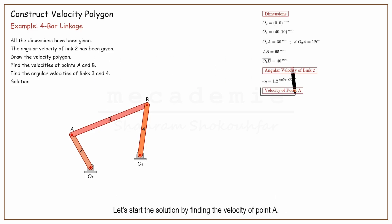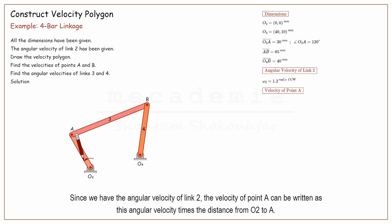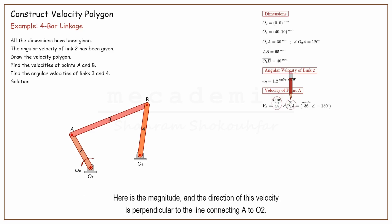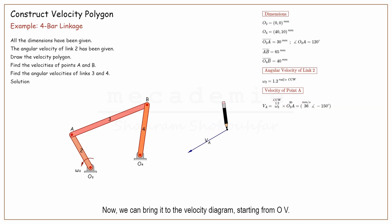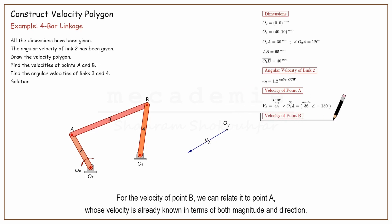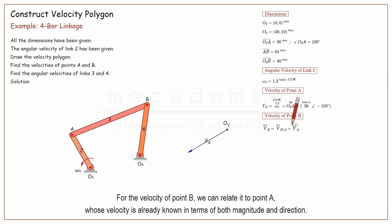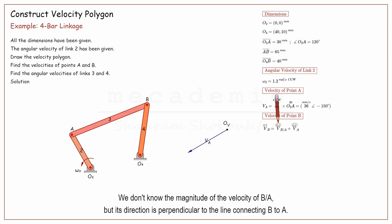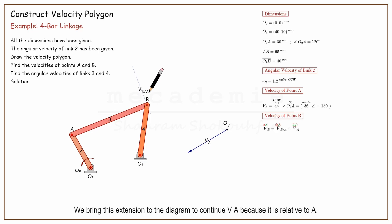Let's start the solution by finding the velocity of point A. Since we have the angular velocity of link 2, the velocity of point A can be written as this angular velocity times the distance from O2 to A. Here is the magnitude, and the direction of this velocity is perpendicular to the line connecting A to O2. Now we can bring it to the velocity diagram starting from OV. For the velocity of point B, we can relate it to point A, whose velocity is already known in terms of both magnitude and direction. We don't know the magnitude of the velocity of B with respect to A, but its direction is perpendicular to the line connecting B to A. We bring this extension to the diagram to continue VA because it is relative to A.